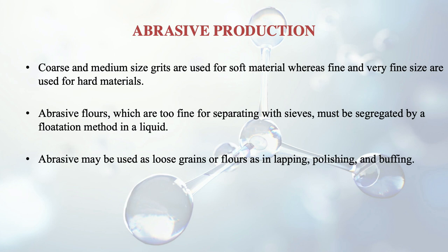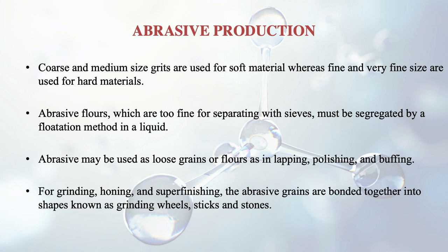Abrasive processes include lapping, polishing and buffing, as well as grinding, honing and superfinishing. For grinding, honing and superfinishing, the abrasive grains are bonded together into shapes known as grinding wheels.